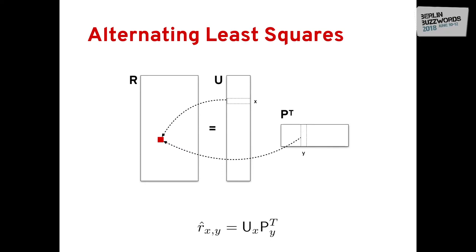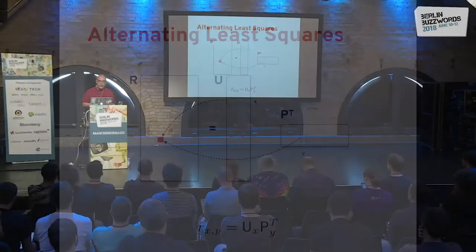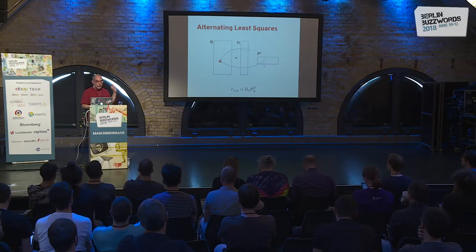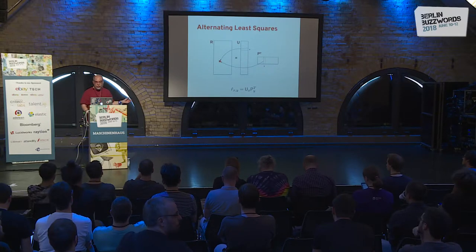There are several ways to tackle this factorization problem, and we'll cover two of them. First, the batch method, which is very well known and aims at factorizing the ratings matrix using the whole of the ratings. Then we'll look at the stochastic gradient descent method, which uses just one single observation — one single rating — at a time.